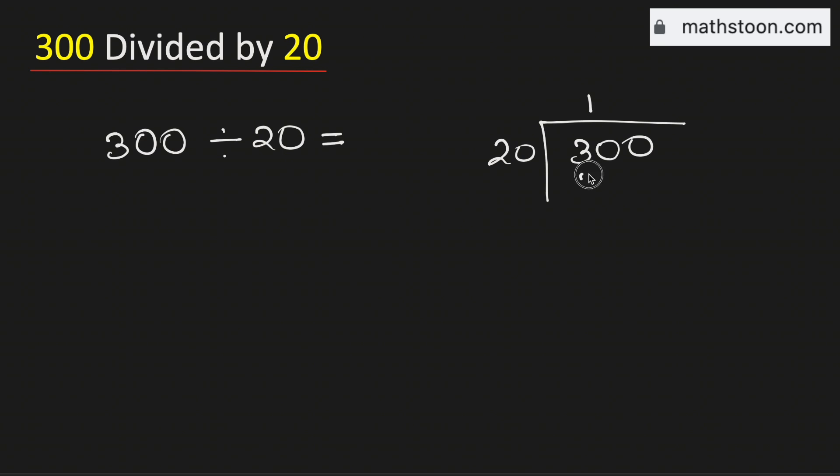Now, 20 times 1 is 20. Subtracting, we get 10. As 10 is less than 20, it cannot go into 10. Therefore, we need to bring down this number 0 here.